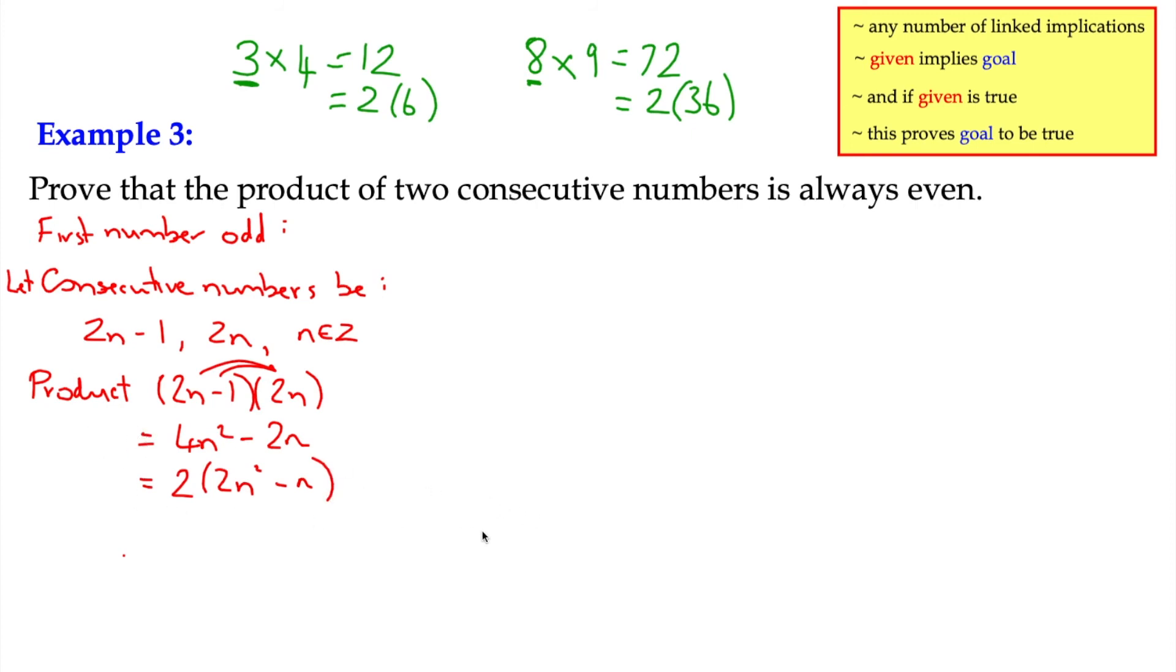We can also then factorise that with a common factor of 2, and get 2(2n squared minus n) in the bracket. So these are all equivalent to each other, so I've put equal signs. Because we've now got an expression which is a common factor of 2, it implies it's an even number. Because it's got a multiple of 2, so 2 is a common factor, which implies that the number is even. So we got to the point where given implies the goal. So we started off with the product, we've got our goal, so we just have to remind ourselves that because these numbers are consecutive, then the product is even.